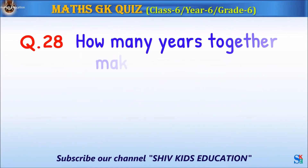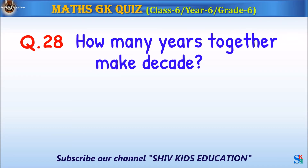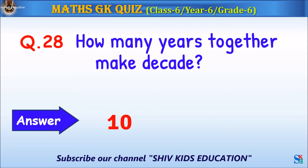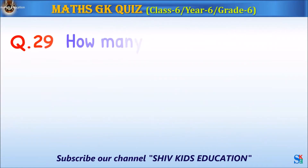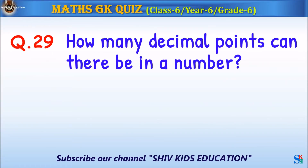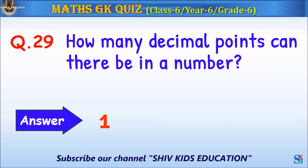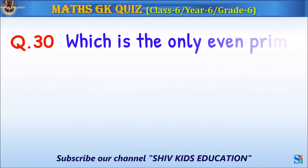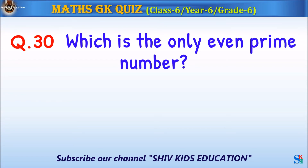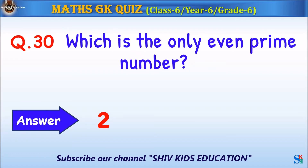Question 28: How many years together make a decade? The answer is 10. Question 29: How many decimal points can there be in a number? The answer is 1. Question 30: Which is the only even prime number? The answer is 2.